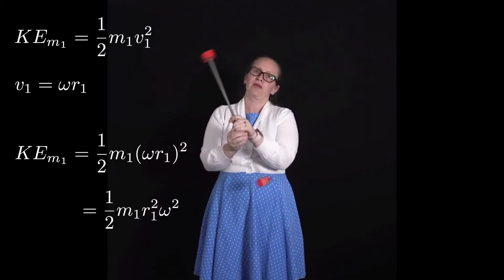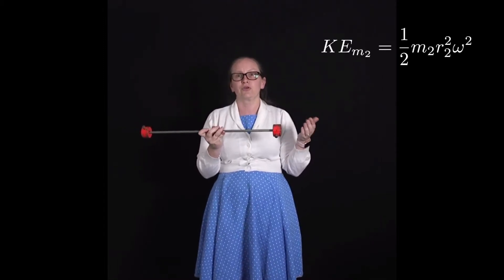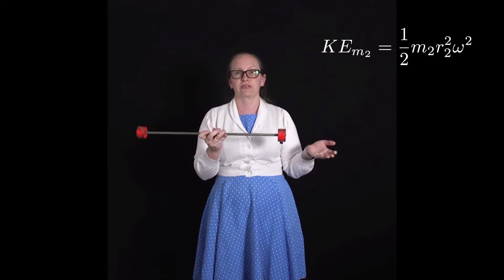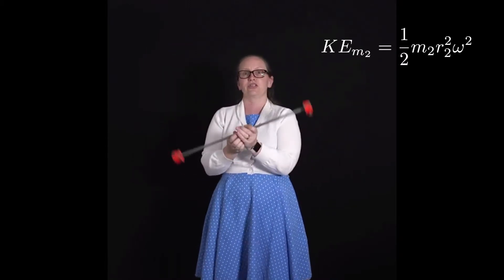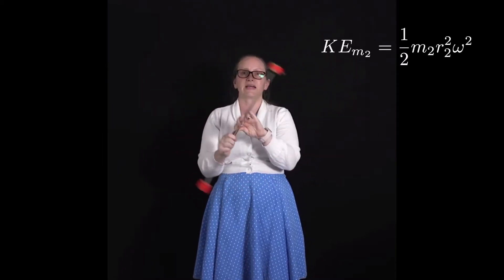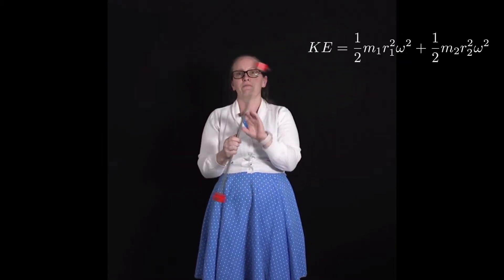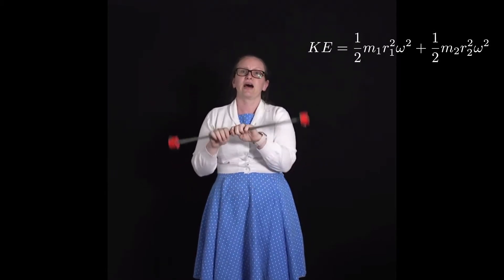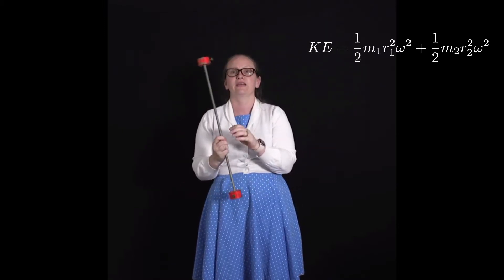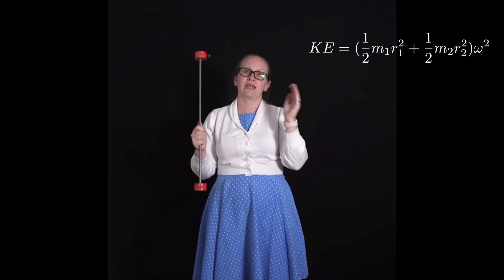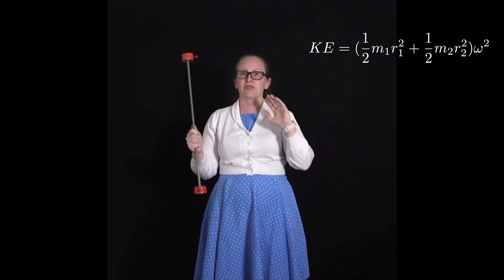For mass two, it's rotating at the same rate because they're all connected to one body rotating at the same rate — they've all got the same ω. So the kinetic energy for mass two is ½ m₂ r₂² ω². The total kinetic energy is therefore ½ m₁ r₁² ω² + ½ m₂ r₂² ω², which we can write as ½ (m₁ r₁² + m₂ r₂²) ω².